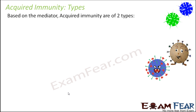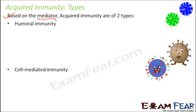Now based on the mediator, acquired immunity is of two types. What do we mean by mediator? The cell which actually acts as the mediator in the process of immune response — we will see that very soon. Based on this, there are two types: humoral immunity and cell-mediated immunity.